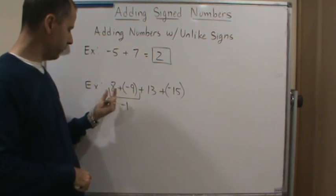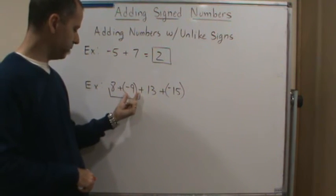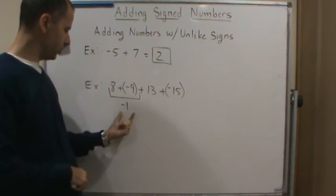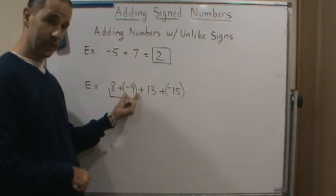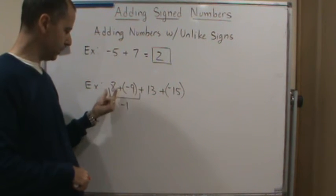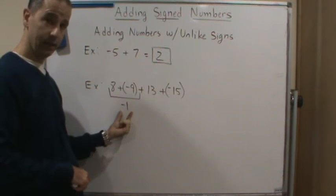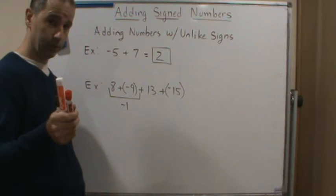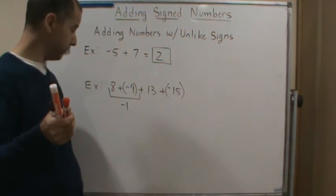Here, the absolute value of 8 is 8. The absolute value of negative 9 is 9. So we subtract those two. And see, 9 is bigger in absolute value than 8. So 9 is bigger than 8. So we're going to give it the sign of negative.